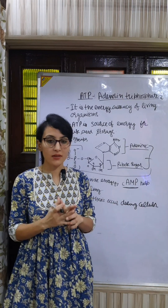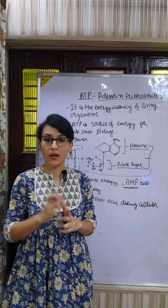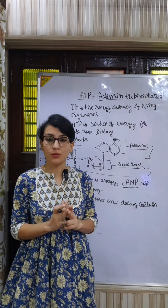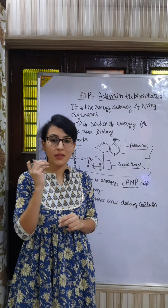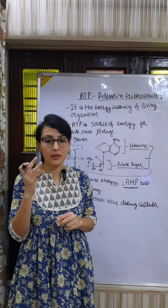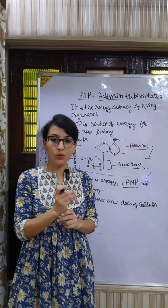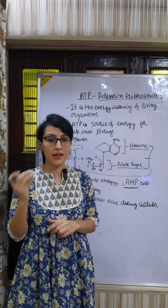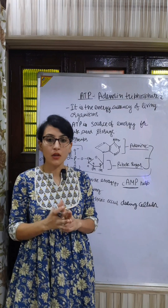Glycolysis occurs in the cytosol and produces 2 ATP. After that, the majority of ATPs are produced in the mitochondrial matrix by two reactions: first the Krebs cycle, and second by oxidative phosphorylation.